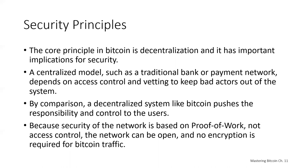When customer data is compromised, the customers are exposed to identity theft and must take action to prevent fraudulent use of compromised accounts — that's why we hear a lot about encryption for credit card systems. However, Bitcoin is dramatically different. A Bitcoin transaction authorizes only a specific value to a specific recipient and can't be forged or modified. It doesn't reveal private information such as the identities of parties and can't be used to authorize additional payments. Therefore, a Bitcoin payment doesn't need to be encrypted or protected from eavesdropping. In fact, you can broadcast Bitcoin transactions over open public channels such as unsecured Wi-Fi or Bluetooth with no loss to security.